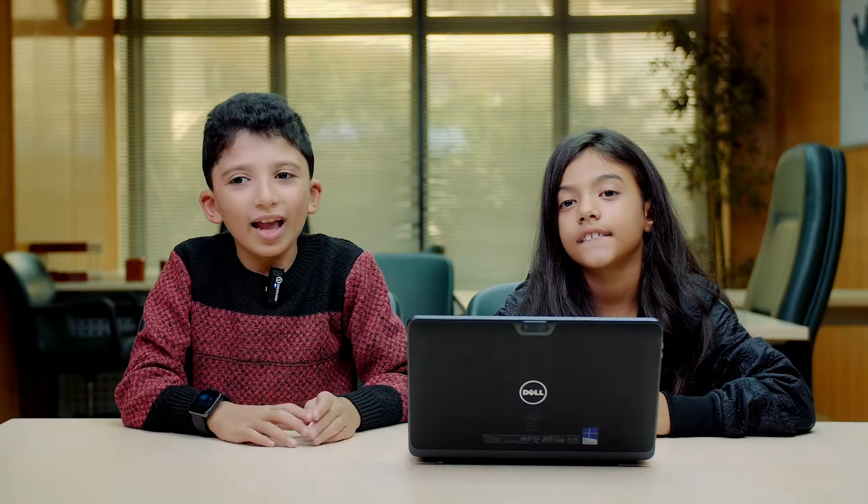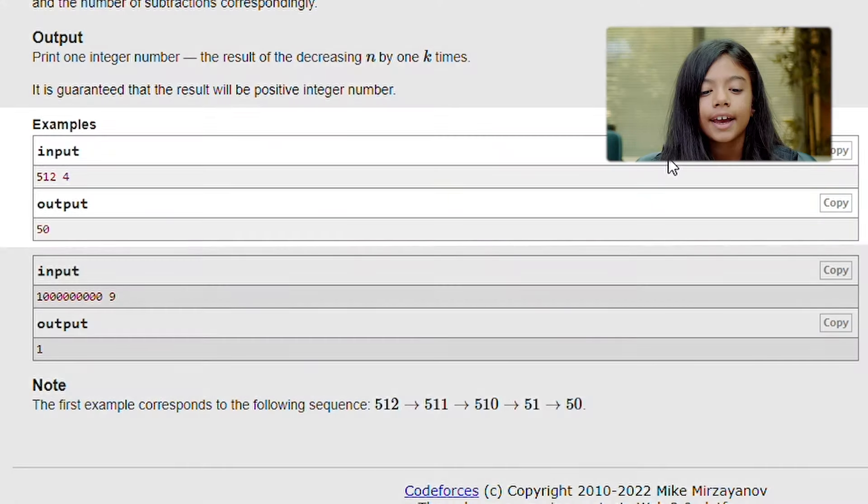Example: Now we have input, the n and the k. The n is the number. The k is the number of subtractions. Now we have output which is the result. Input: 512, four times. Output: 50.